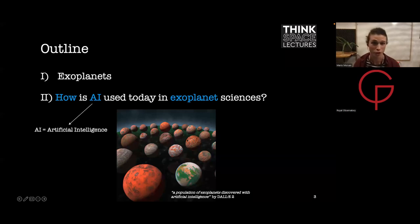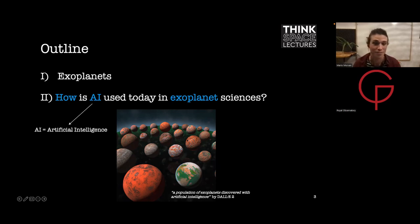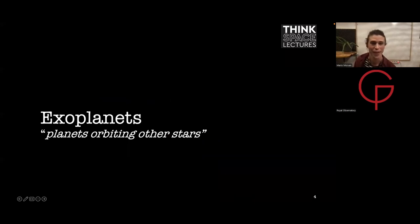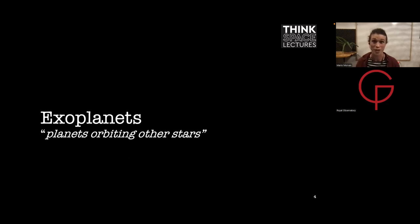This image was generated using the popular DALL-E 2 artificial intelligence with the caption 'a population of exoplanets discovered with artificial intelligence.' It's quite mystic to me what it represents, but it's an interesting image. So, exoplanets are nothing else than just planets orbiting other stars — a very simple definition, although this does suppose that we agree on what a planet is. We all have an intuitive understanding of what planets are, and this should be enough for today's lecture.